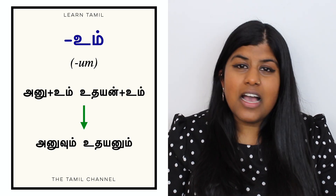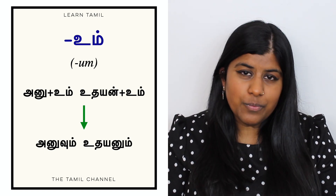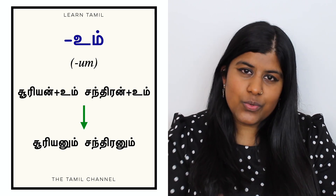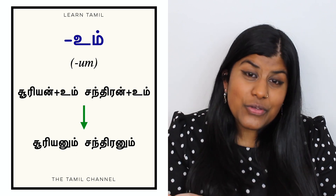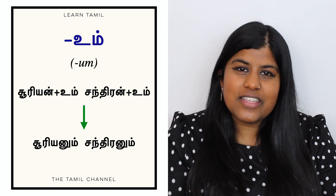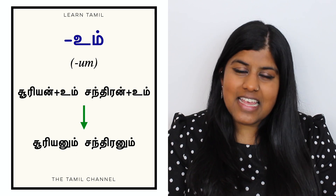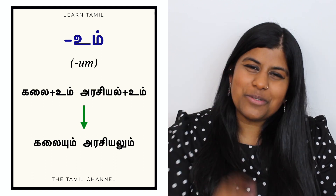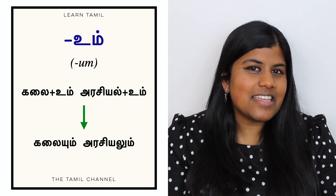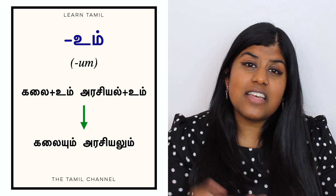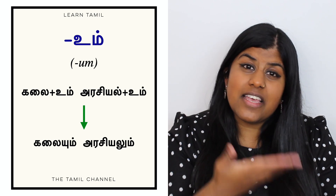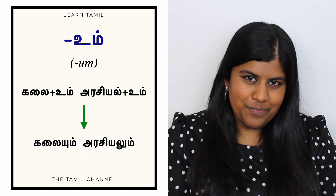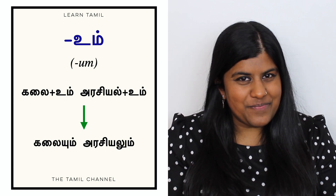Another example: Anu and Udayen — 'Anuvum Udayenum', meaning 'Anu and Udayen'. One more: Suriyen means sun and Sandiran means moon — 'Suriyenum Sandiranum' means 'the sun and the moon'. And one more: Kalei means art and Araciel means politics — 'Kaleium Aracielum' means 'arts and politics'.